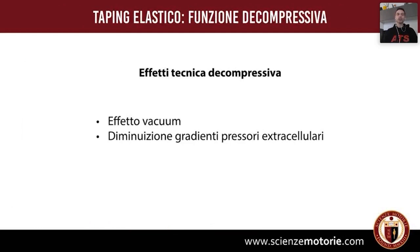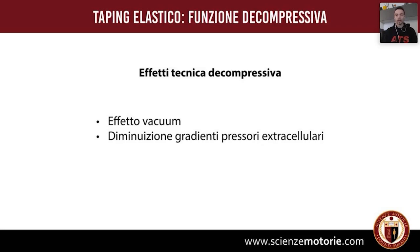Cosa stiamo facendo sotto la cute? L'effetto principale è l'effetto vacuum, cioè effetto vuoto, che conosciamo per diversi trattamenti manuali, con coppette o macchinari. Il nostro taping elastico crea un sollevamento della cute, generando uno spazio sottocutaneo, e in questo spazio si crea un vacuum. La creazione di questo vacuum porta a una diminuzione dei gradienti pressori extracellulari.